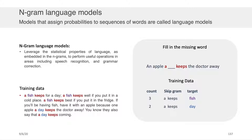Now that we know what an n-gram is, we can talk about n-gram language models. A language model is any sort of object that assigns probabilities to sequences of words. Even just a lookup table that you put a word into and it gives you a probability on the other side — that's a language model. N-gram language models are really useful because they can leverage the statistical properties of language embedded within the n-grams to perform useful operations in areas including speech recognition and grammar correction.